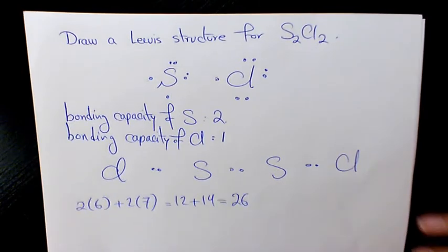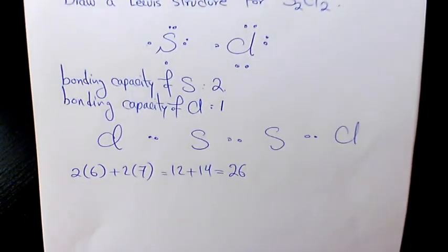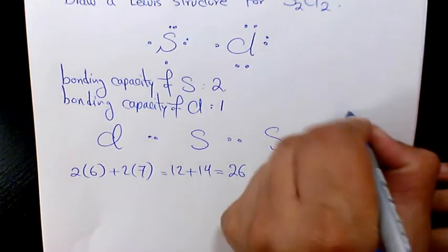The next step would be to place pairs of electrons, or remaining valence electrons, as lone pairs on the surrounding atoms. The surrounding atoms are chlorine, so we need to place lone pairs on all of these chlorines here.